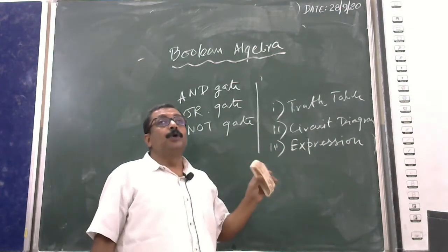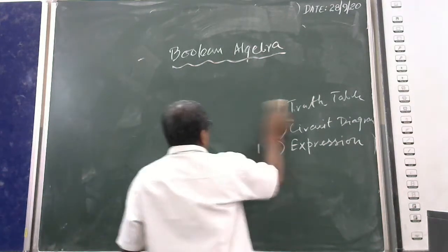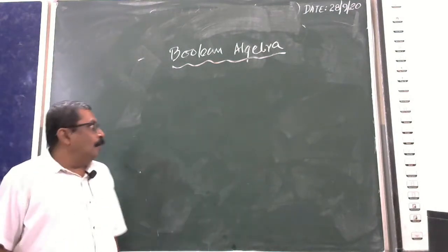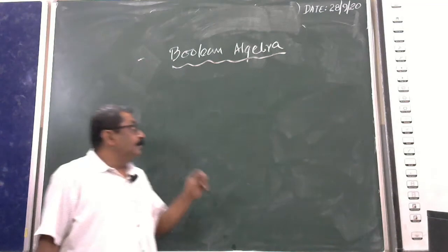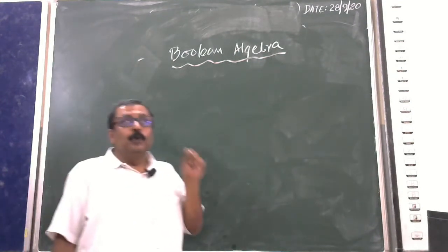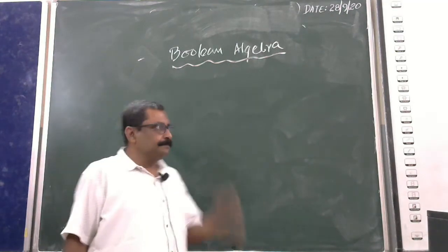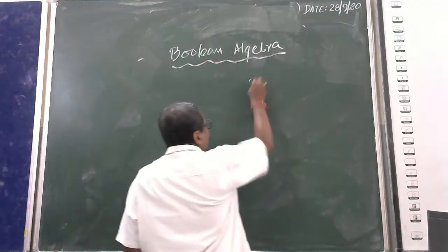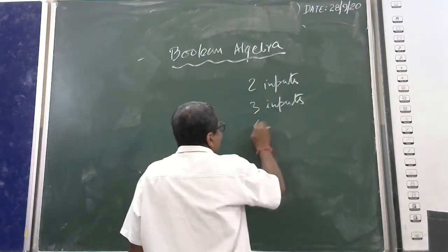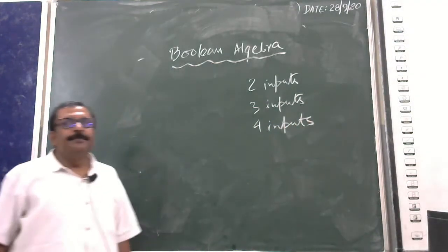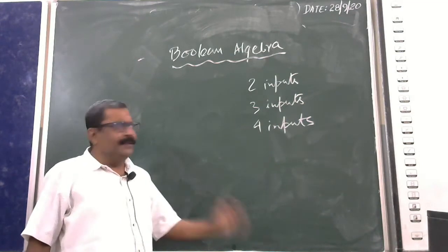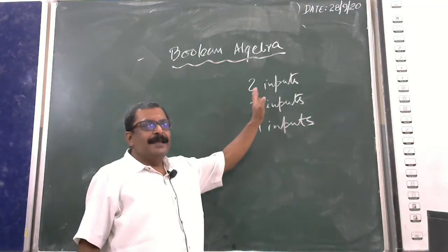First, how to draw a truth table. When you want to pass certain inputs to the different gates — AND, OR, NOT — you need to know how many inputs are being passed. The number of inputs can be two, three, four, five, six, or more.